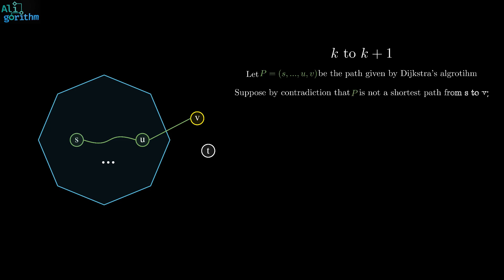This means that there is a shortest path P' from S to V that's shorter than P. Well, let U' be the vertex just before V in P'. Using the fact that V is extracted from the heap after U', we can prove that U' must be in the blue area, I mean the visited set. Focusing on the length of P' is the length of S U' plus W.